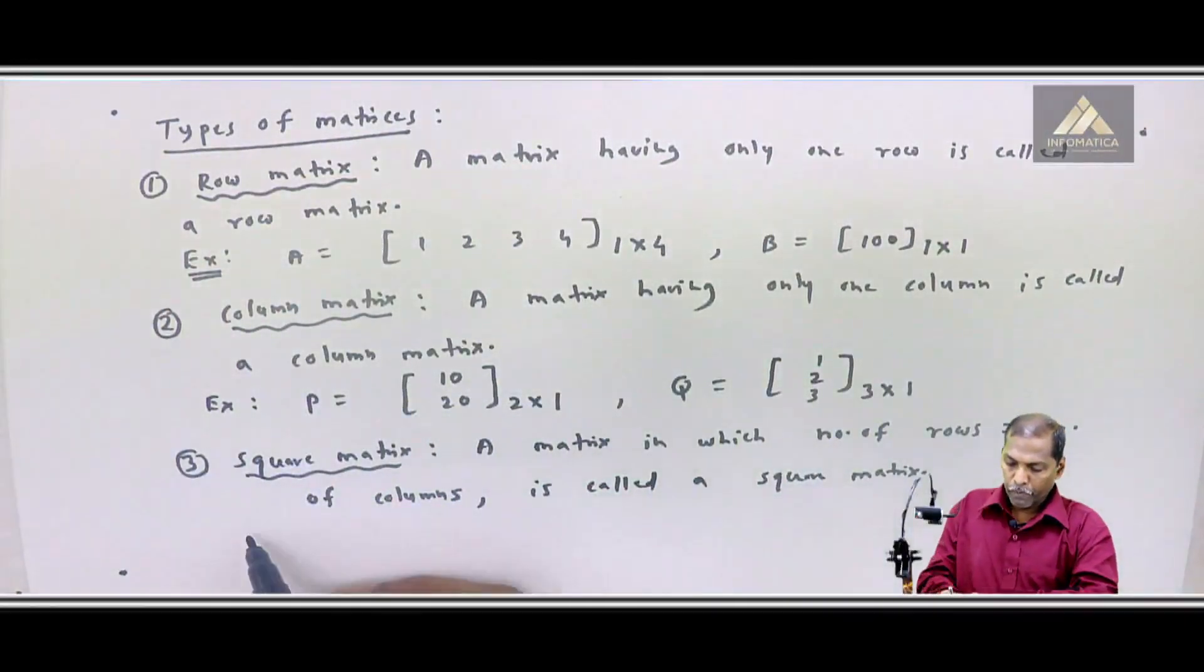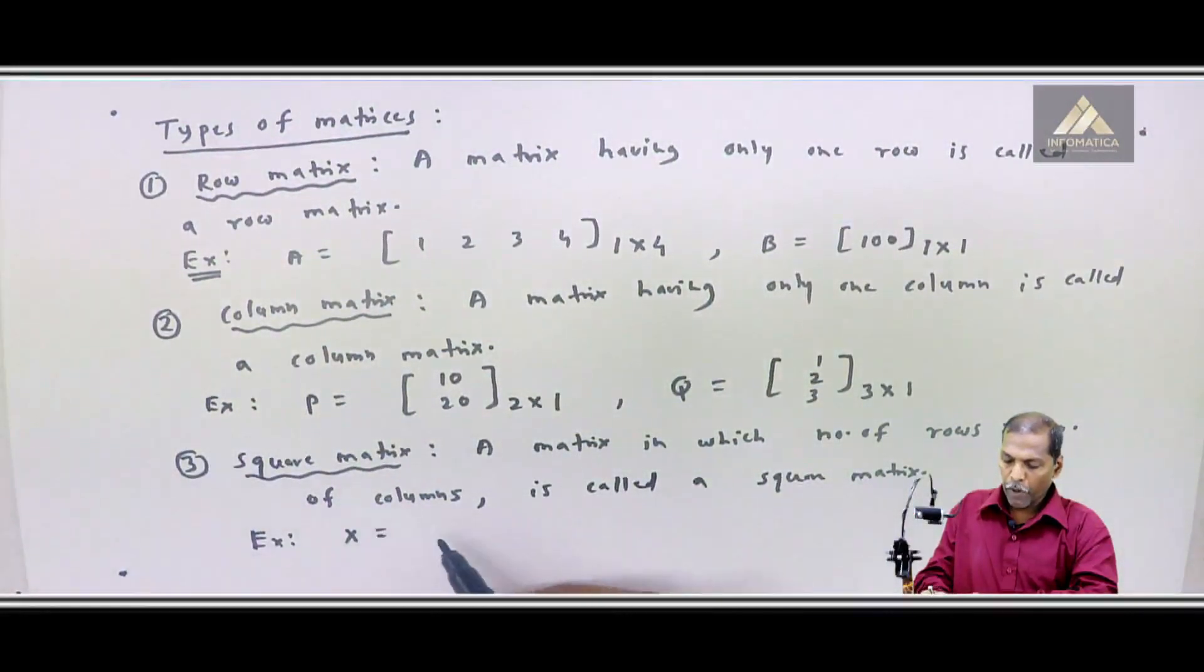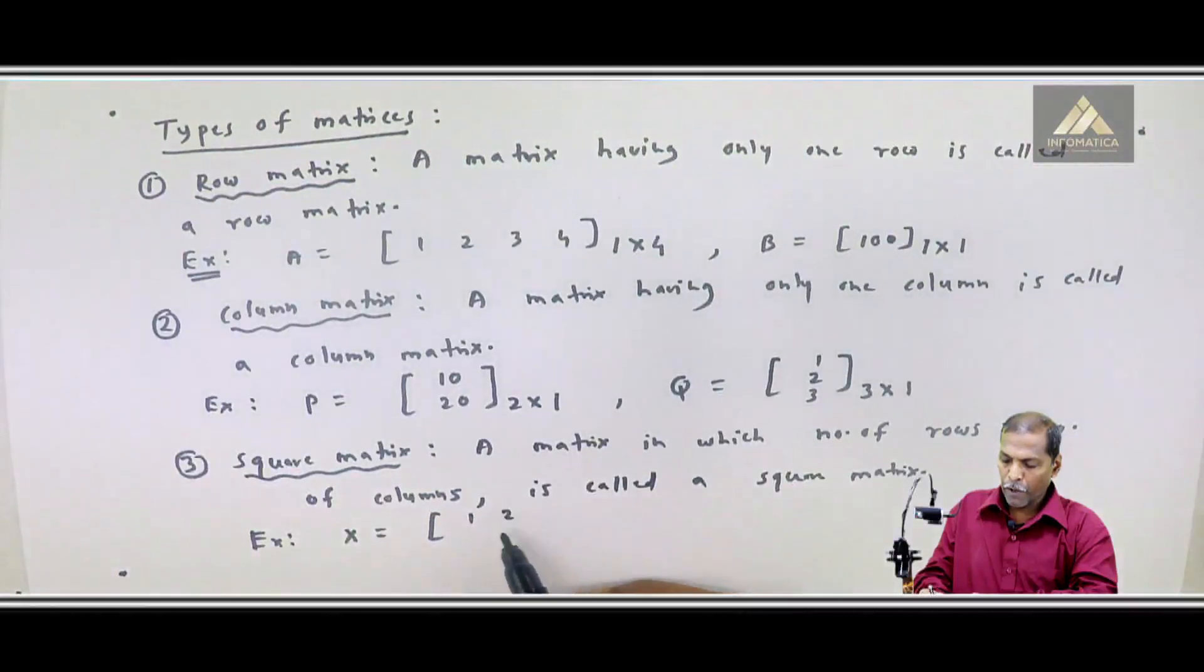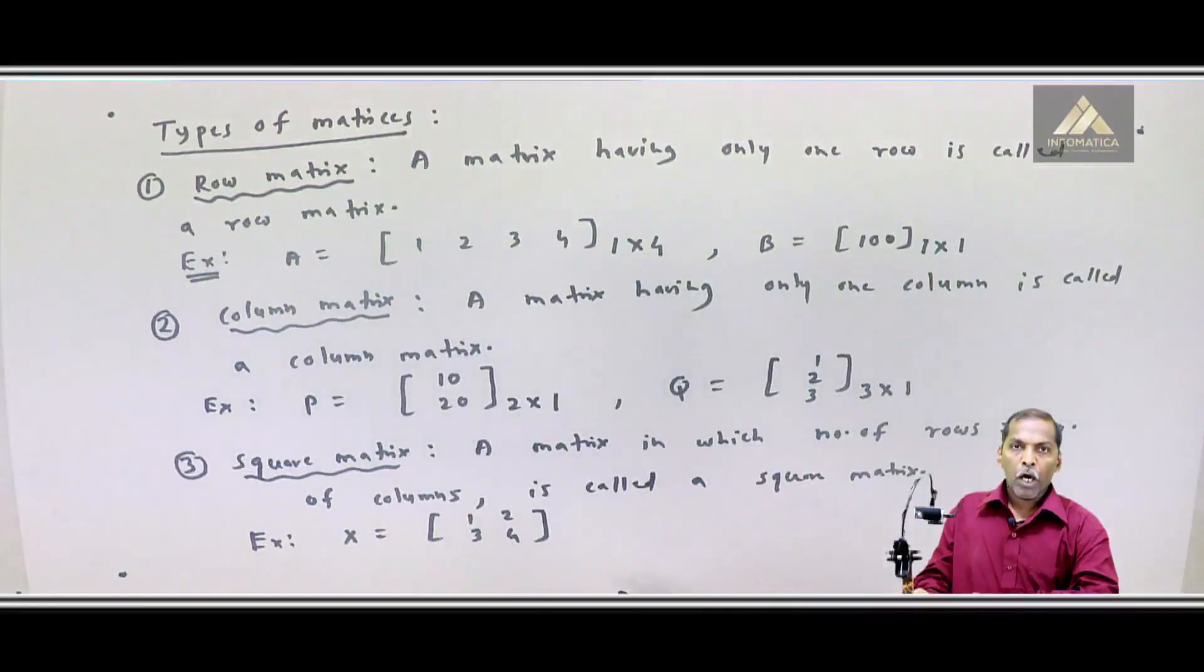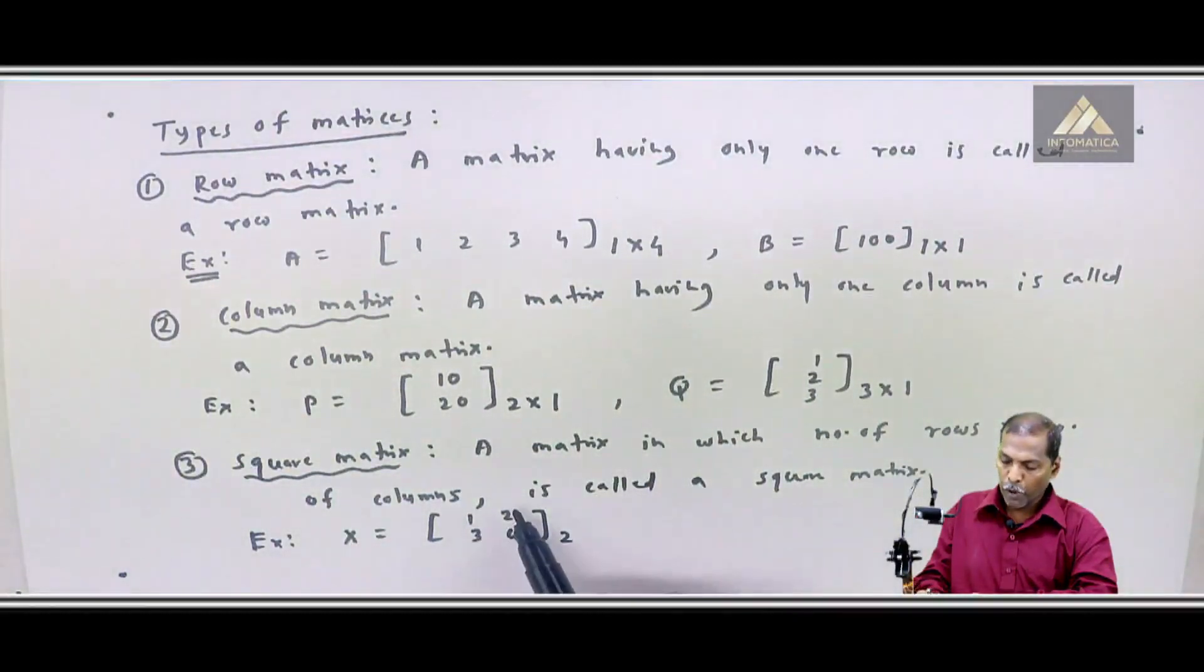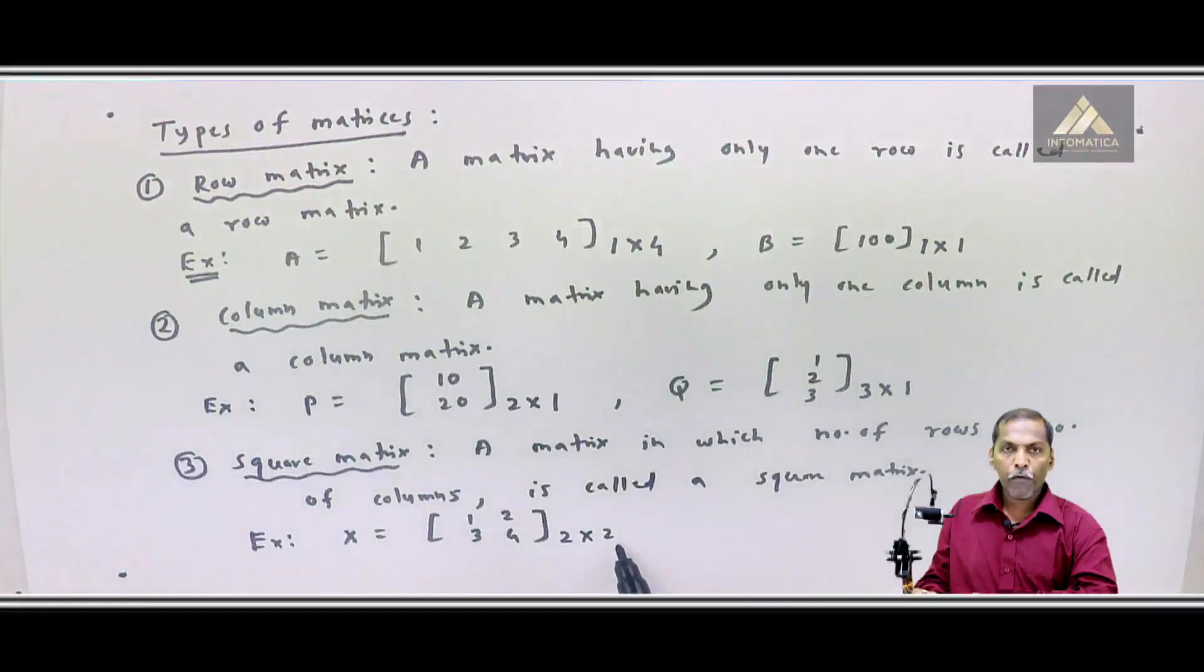For example, X equal to matrix 1, 2, 3, 4. A matrix in which number of rows is equal to number of columns. Therefore, matrix X is a square matrix.